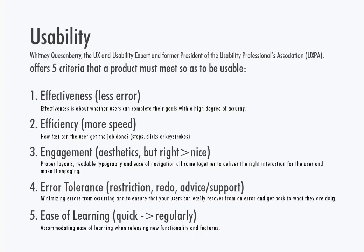The fourth is error tolerance — it's about minimizing errors from occurring in the first place and ensuring that users can easily recover from an error and get back to what they were doing. Examples include asking 'are you sure?' before leaving an uncompleted page or deleting a large file. Even if you leave the page, the program saves the process temporarily, like Microsoft Office programs. And even if you deleted a picture, there is always the deleted pictures folder in Apple phones.